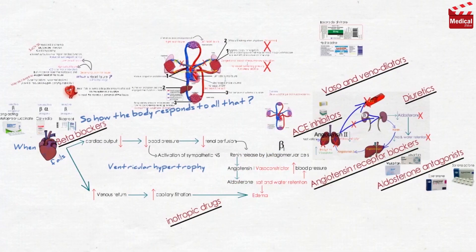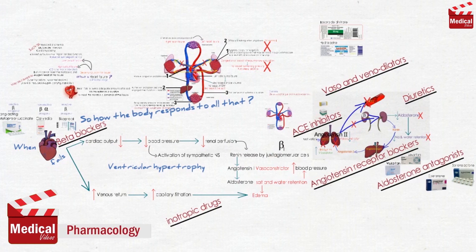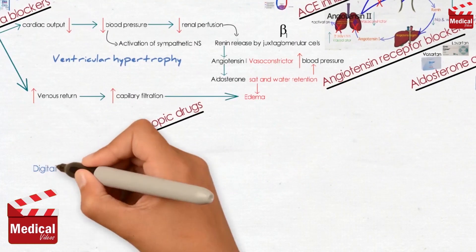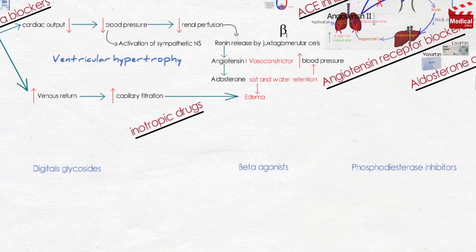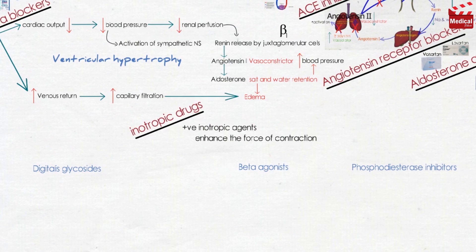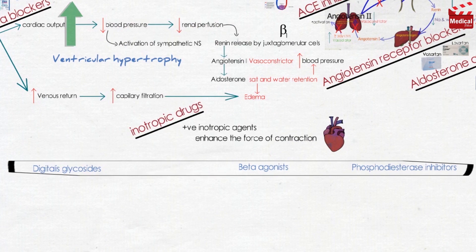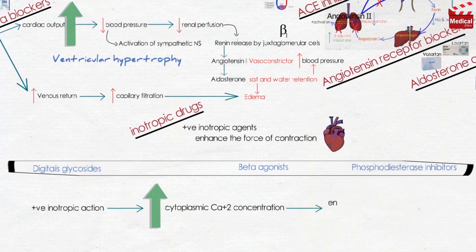In this lecture we'll talk about the second part, which is the inotropic drugs. We'll go through three groups: digitalis glycosides, beta agonists, and phosphodiesterase inhibitors. Positive inotropic agents enhance the force of contraction of the heart, so they increase cardiac output. Although these drugs act by different mechanisms, the inotropic action is the result of an increased cytoplasmic calcium concentration that enhances the contractility of cardiac muscle.